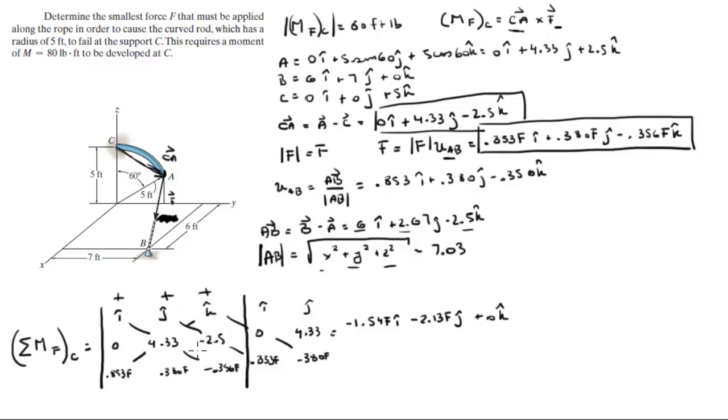So now you do your negative diagonals, negative, negative, negative. 0.853 times 4.33 times k is negative 3.69 F in the k. Negative 0.380 times negative 2.5 times i is positive 0.95 F in the i. And negative 0.356 times 0 times j is 0. When you add this up together, you get that this is equal to negative 0.59 F in the i, minus 2.13 F in the j, minus 3.69 F in the k.